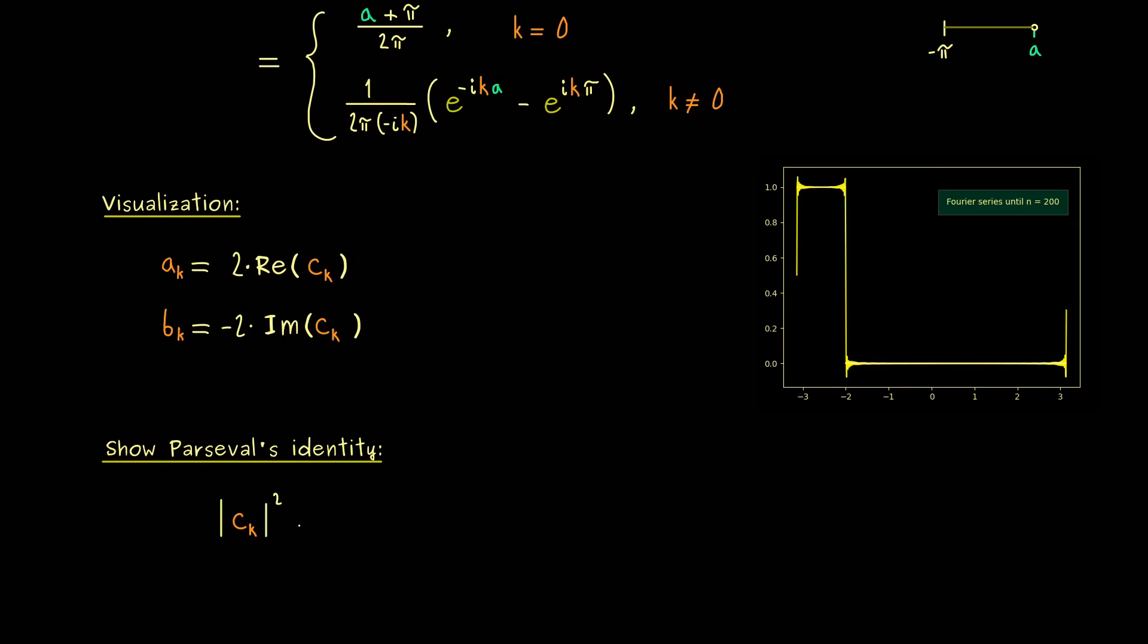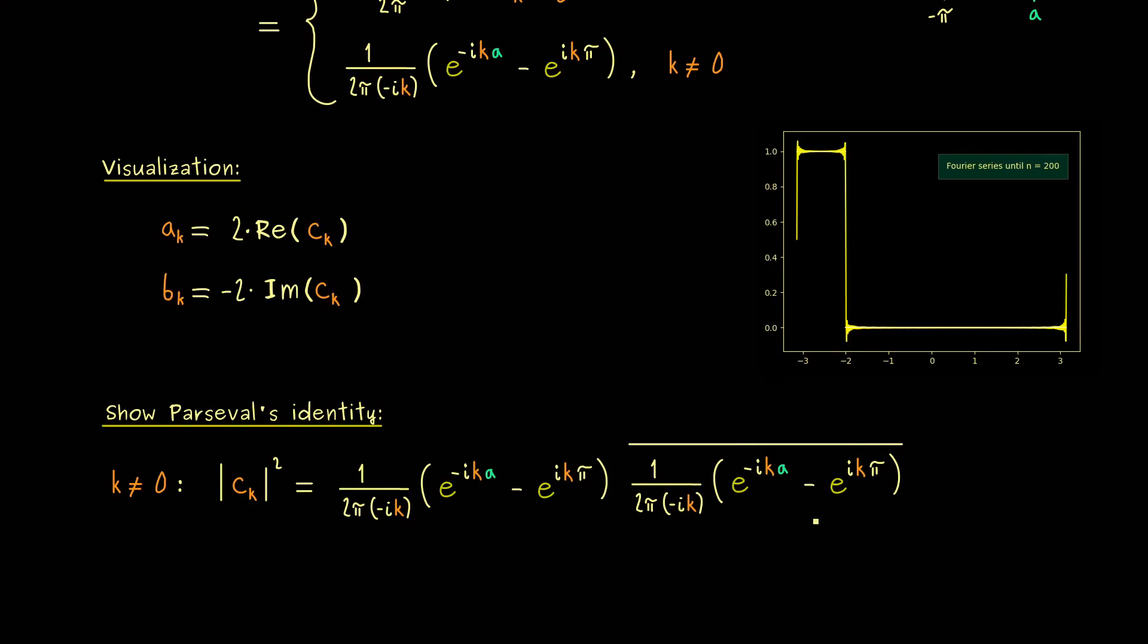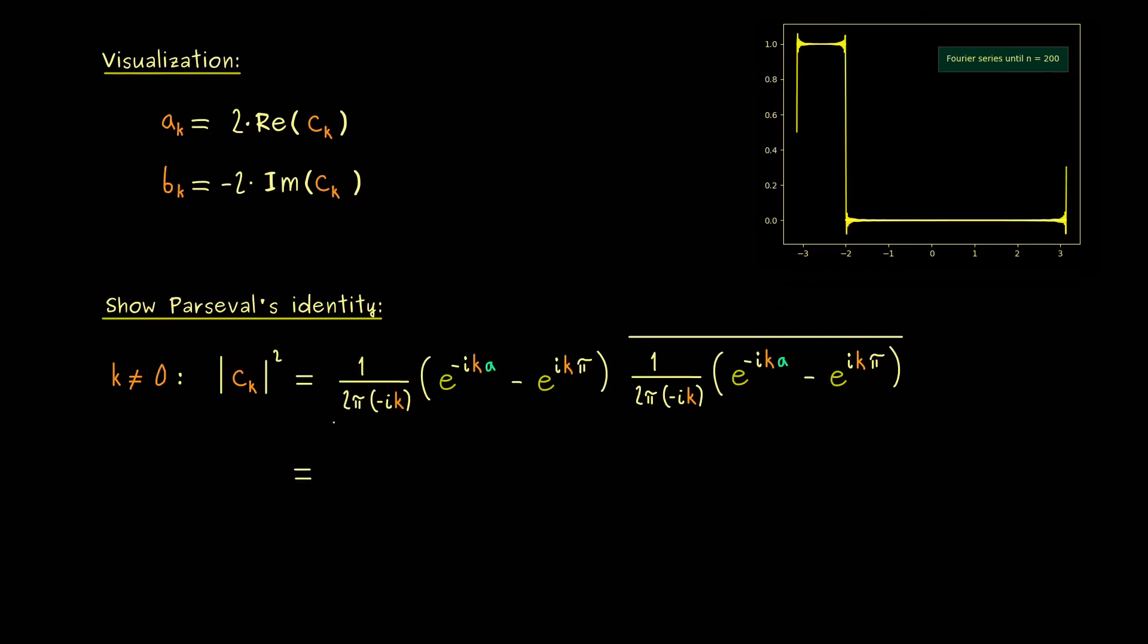Therefore, let's first calculate this number for each k. And obviously only the case k is not equal to zero makes some work here. So what we do is to multiply this number here with its complex conjugation. So indeed, this should not be too complicated. Because we just have to multiply some exponential functions.